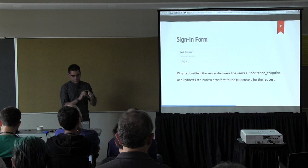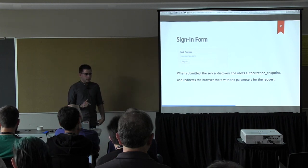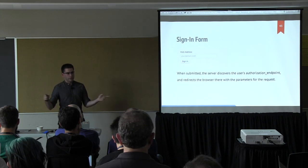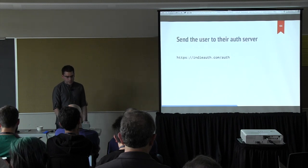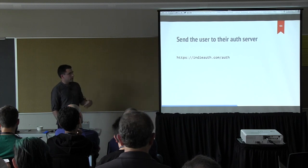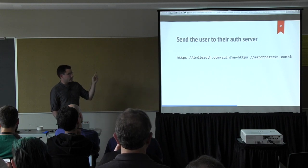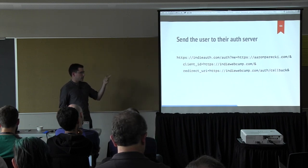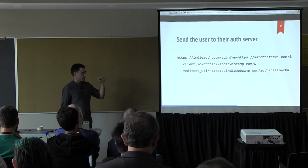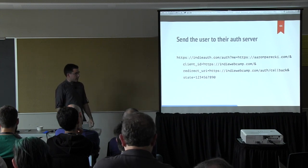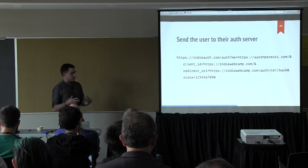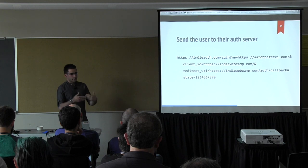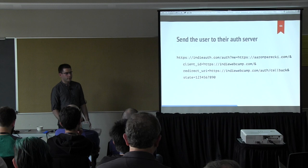The sign-in form is going to look something like this. The user clicks sign-in; the wiki has to discover the user's authorization endpoint and then redirect the browser there using all the OAuth parameters already documented in the OAuth 2 spec. We're going to build up the authorization URL starting with my authorization endpoint, adding my website that I typed into the form, the client ID, the redirect URI, and a state parameter. The state is an arbitrary string used to maintain session data and link up the request so that when it comes back it can be matched. It's also there for security to prevent cross-site attacks.